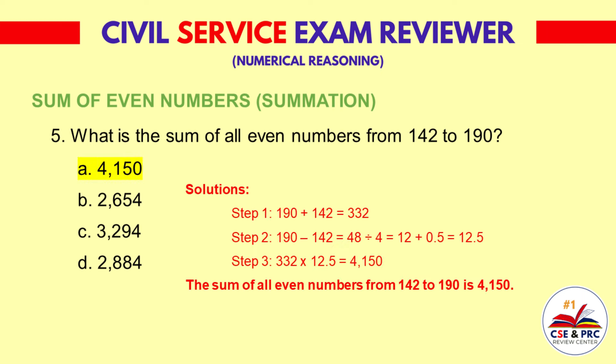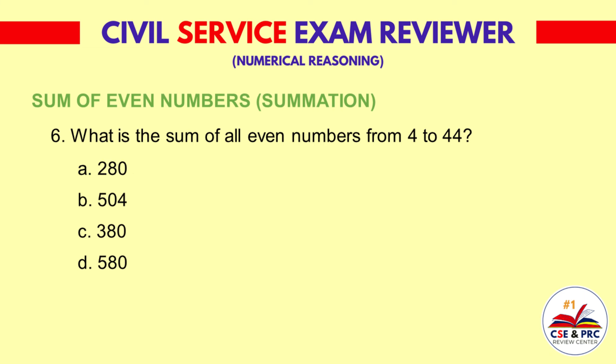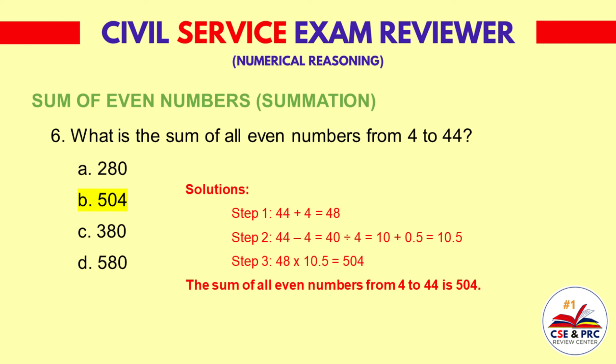Question 6: What is the sum of all even numbers from 4 to 44? a. 280  b. 504  c. 380  d. 580. The answer is b. 504.